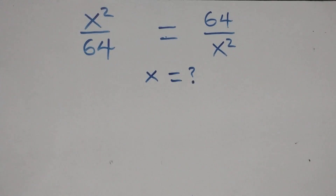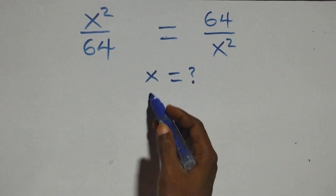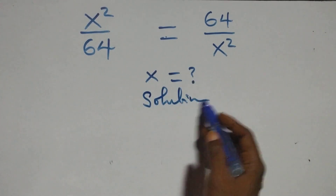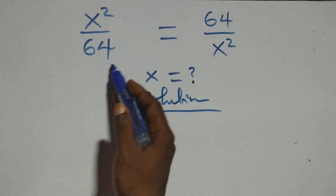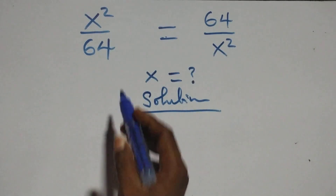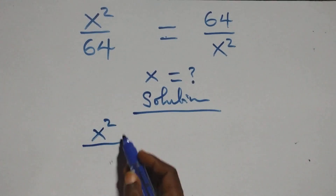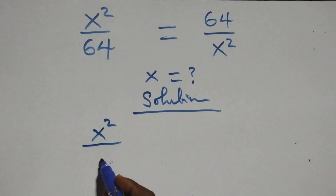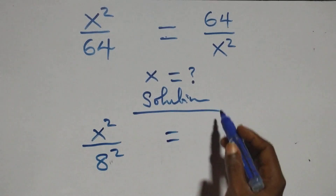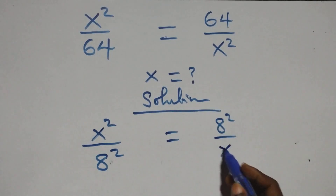Hello, you are welcome. We will solve this nice exponential equation. What we have here is x² over 64 equals 64 over x². We can rewrite 64 as 8 times 8, which is 8², so we have x² over 8² equals 8² over x².